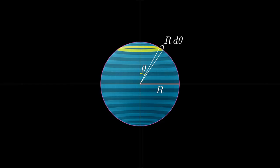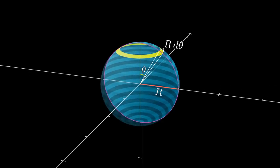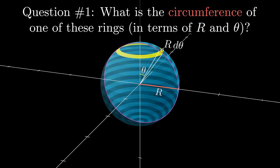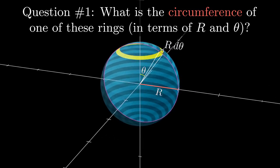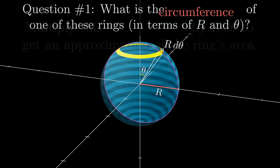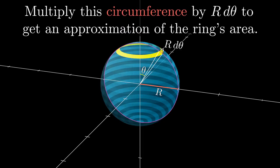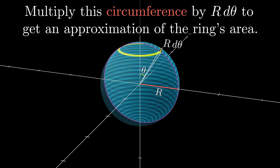Alright, structured exercise time. We'll ease in with a warm-up. Question number one, what is the circumference of this ring, say, at the inner edge, in terms of r and theta? Once you have that, go ahead and multiply the answer by the thickness, r times d theta, to get an approximation for the ring's area. An approximation that will get better and better as you chop up the sphere more and more finely.